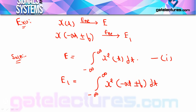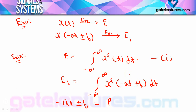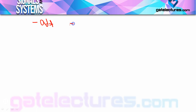To write E1 in terms of E, let's substitute: let p = -at ± b, where a and b are constants (scaling and shifting numbers). Differentiating both sides: dp = -a·dt, so dt = -1/a · dp. Note that b is constant so its differentiation is 0.